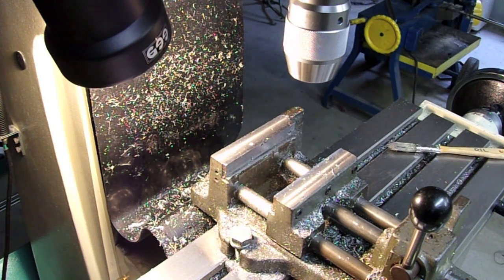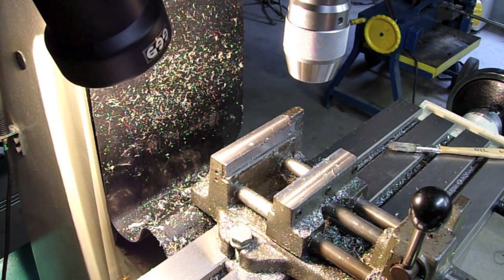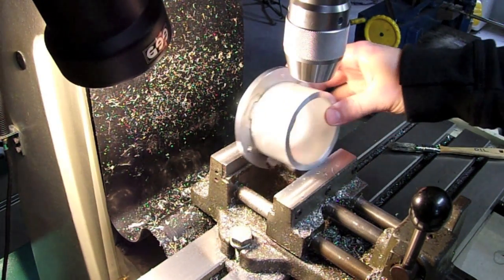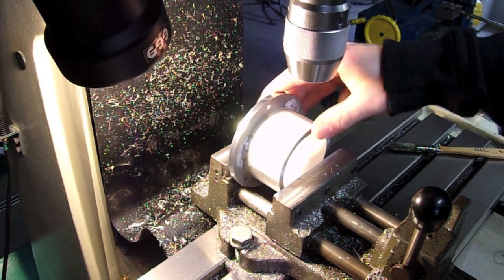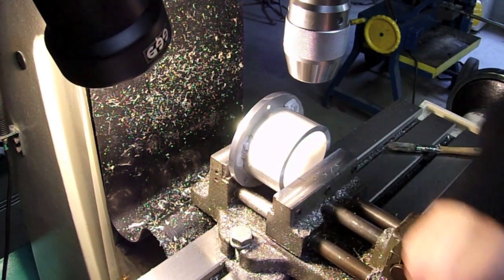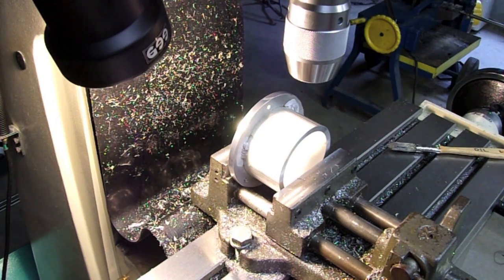Now for one final operation on this part, I want to add a set screw into the side so I can lock the blast gate more securely when I place it inside the flange. I have my mill already set up from the previous one that I did, so I'll just set it into my vise like so, lock it down, and we're all set to drill the hole first.